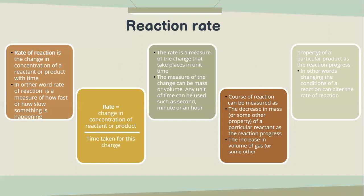Rate of reaction can be measured as the decrease in mass or some other property of a particular reactant or product as the reaction progresses. In other words, changing the condition of a reaction can alter the rate of reaction.